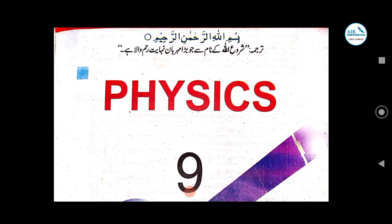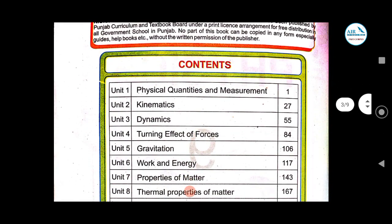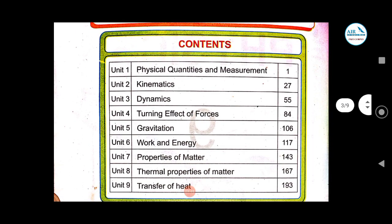Starting with the great name of Allah, who is the most beneficent and the most merciful — moving on to our contents. What will we study in this subject? We are comprised of nine units, in which we will cover around five to six units in your pre-ninth session, and the remaining will be covered in the ninth class. The basic purpose of pre-ninth is to have a preliminary knowledge of the subject before you are promoted to the ninth.